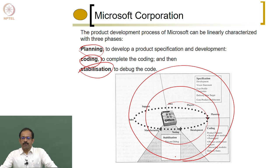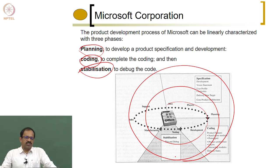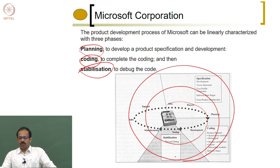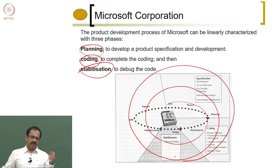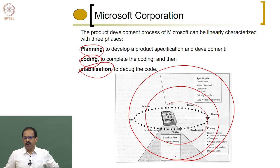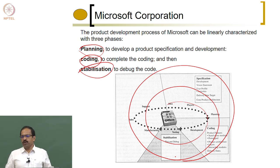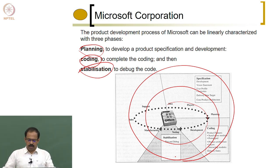Any company or manufacturer you take, you will see that they follow a process which will be either a stage-gate process or a spiral design process. The names and nomenclature may be slightly different, but all companies will have stages and gates to ensure that the product is really worth taking forward and that customers will be happy to use the product.